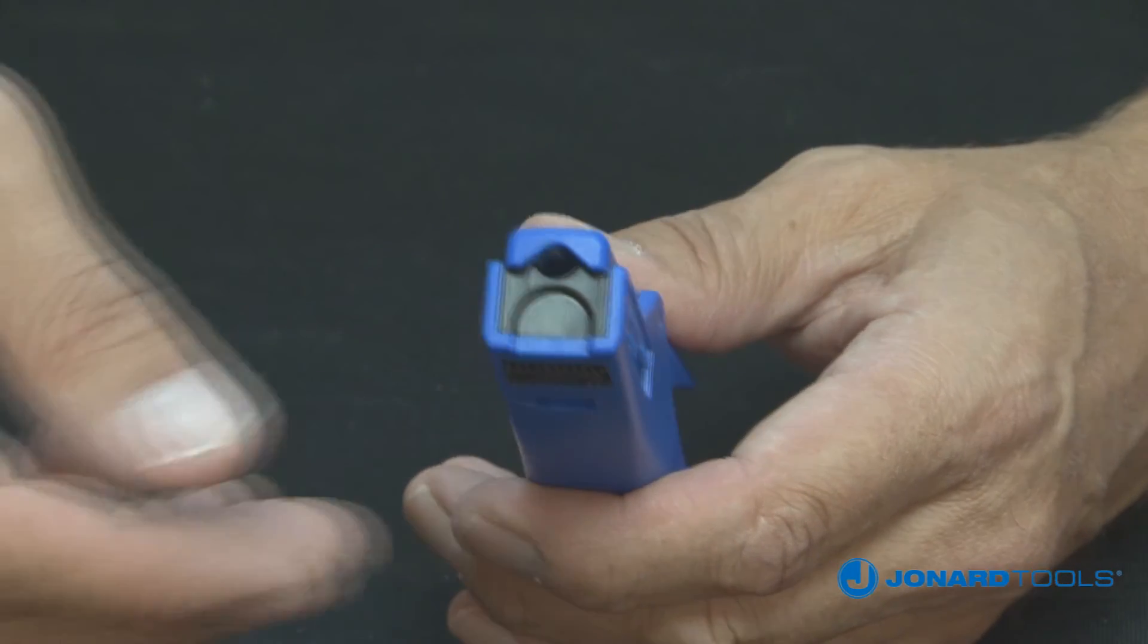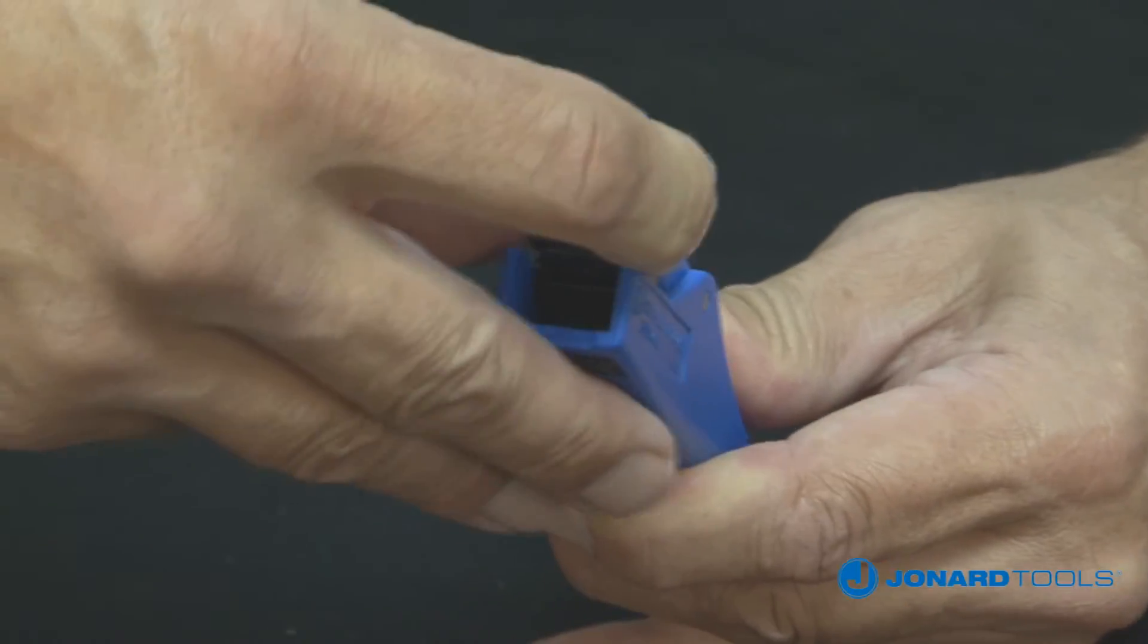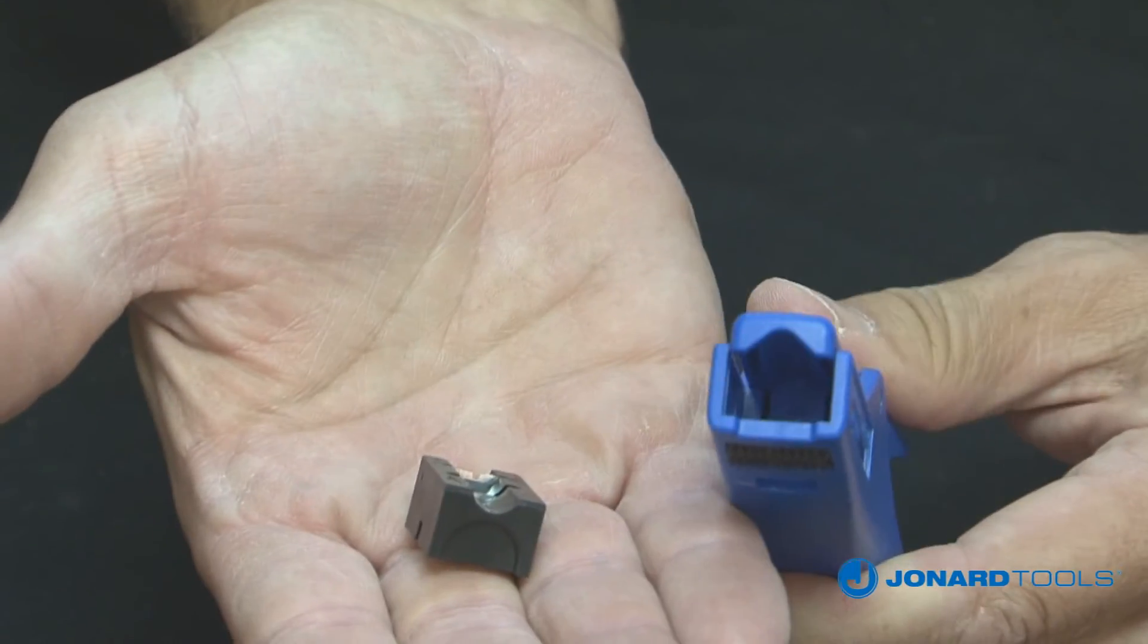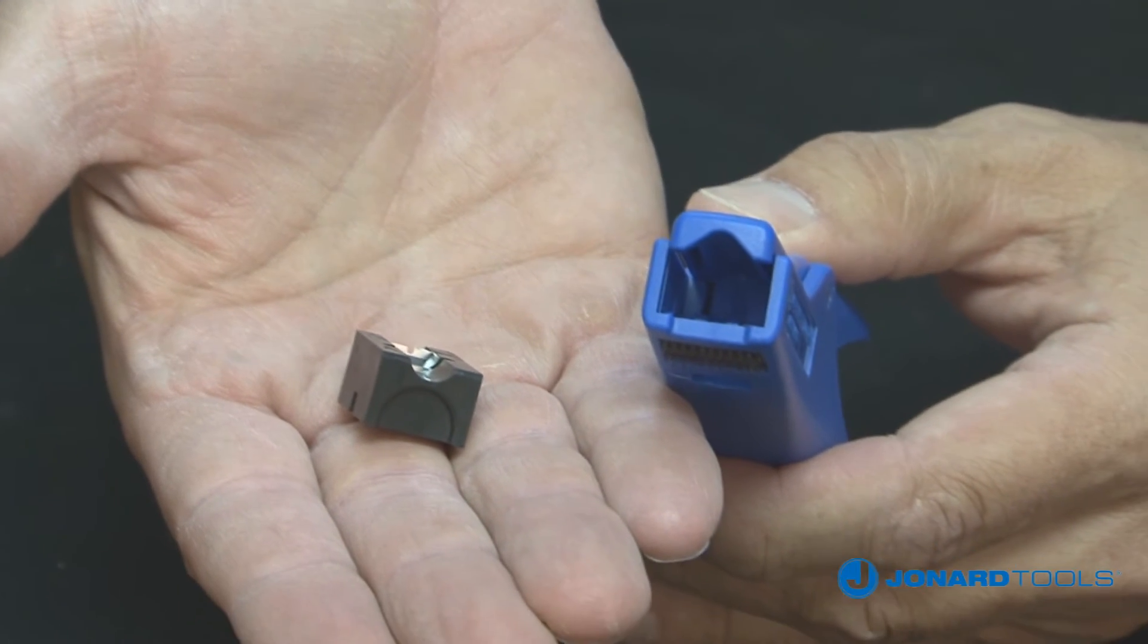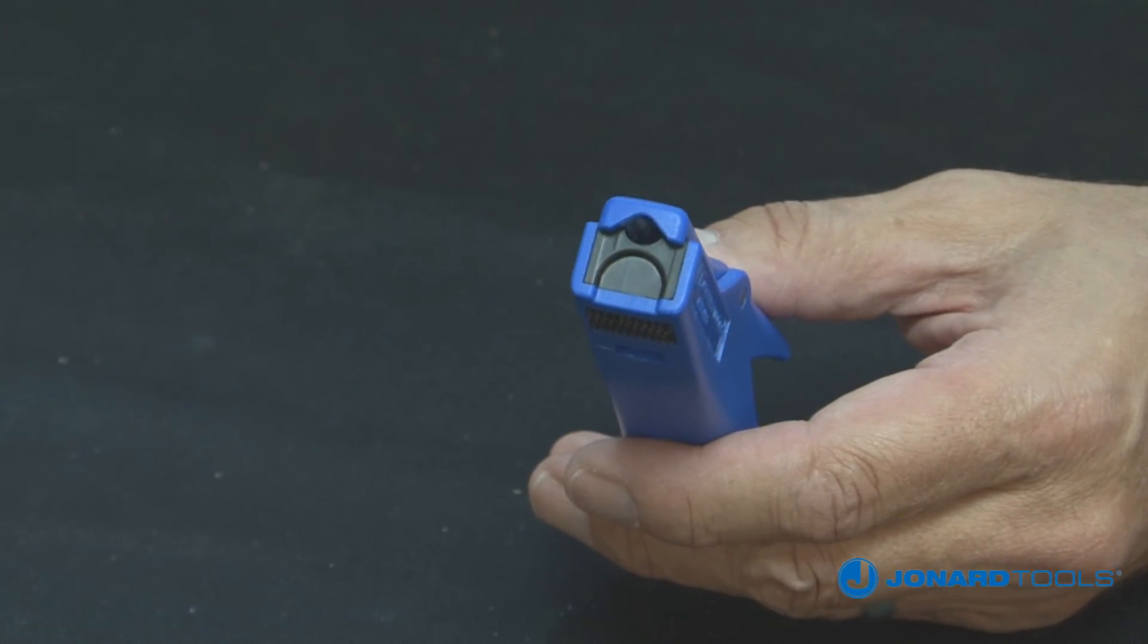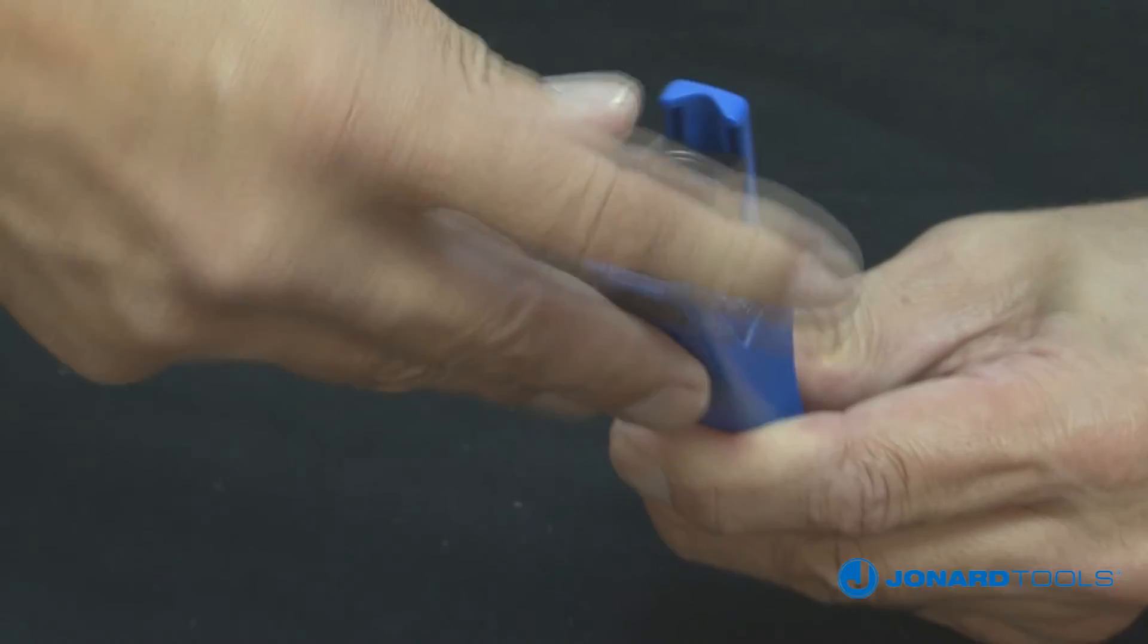To replace blades, simply open the jaws, push upward on the front of the blade cartridge, and the cartridge will lift out. There is a cutout for your thumb to fit into to help facilitate removing the blade.